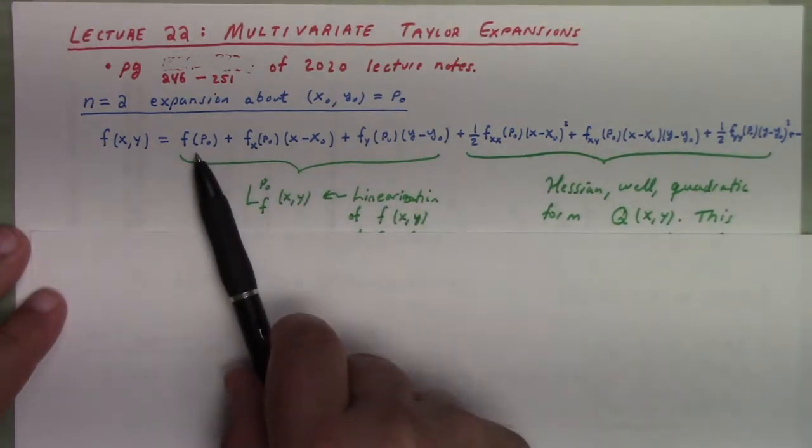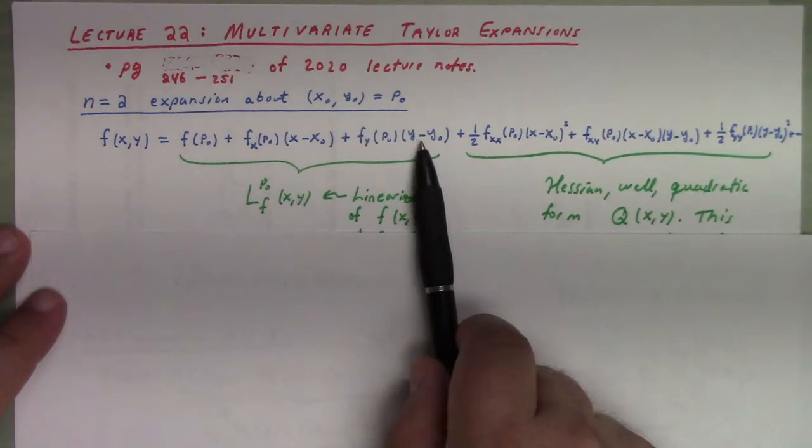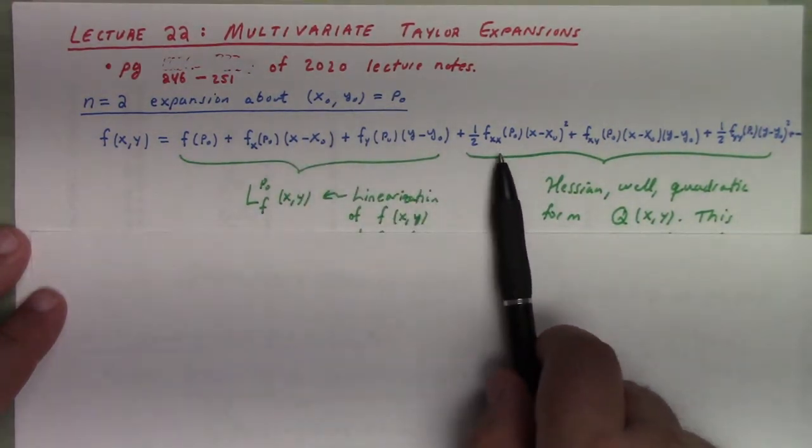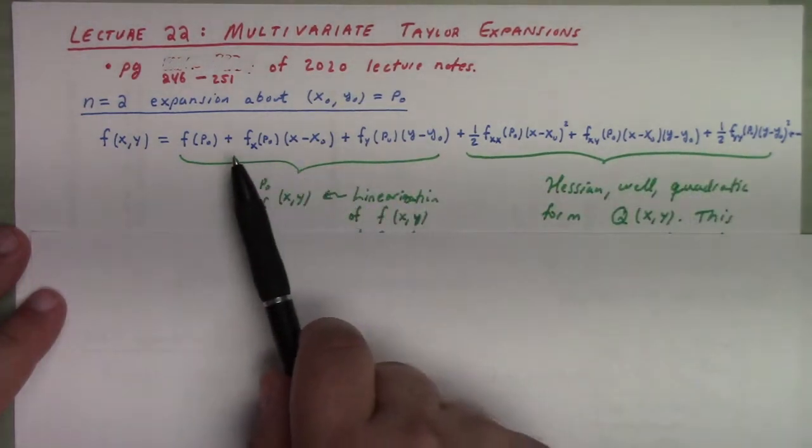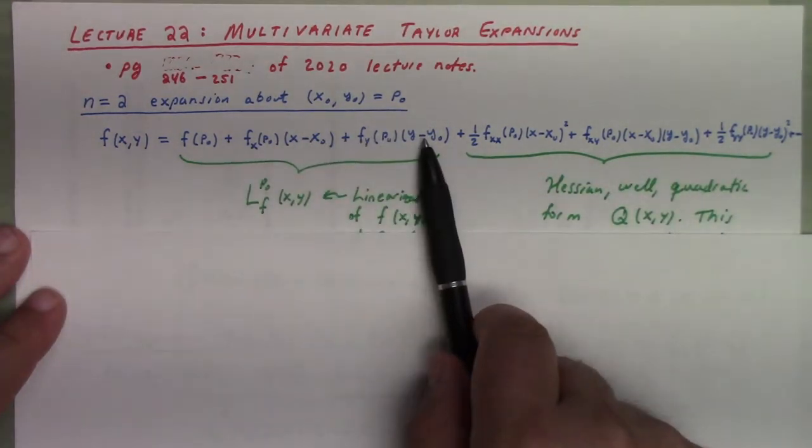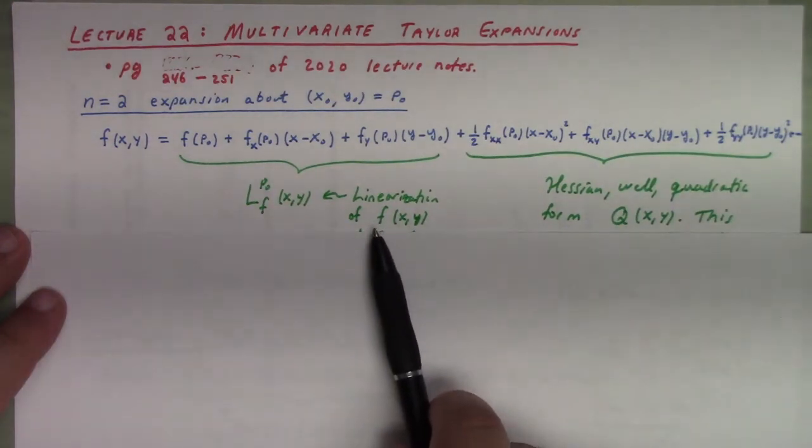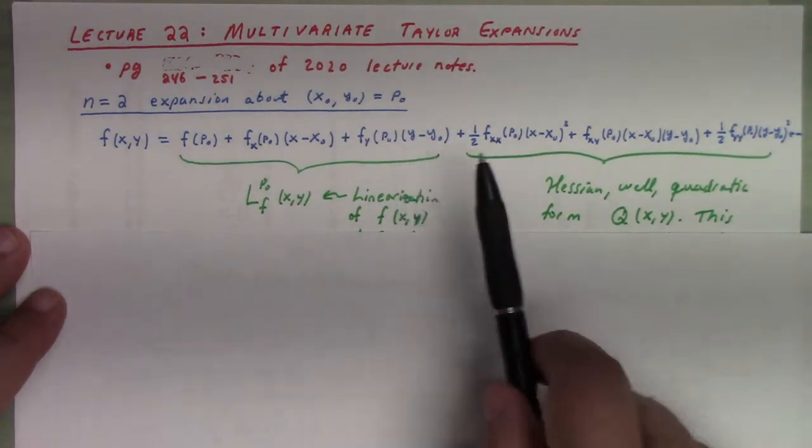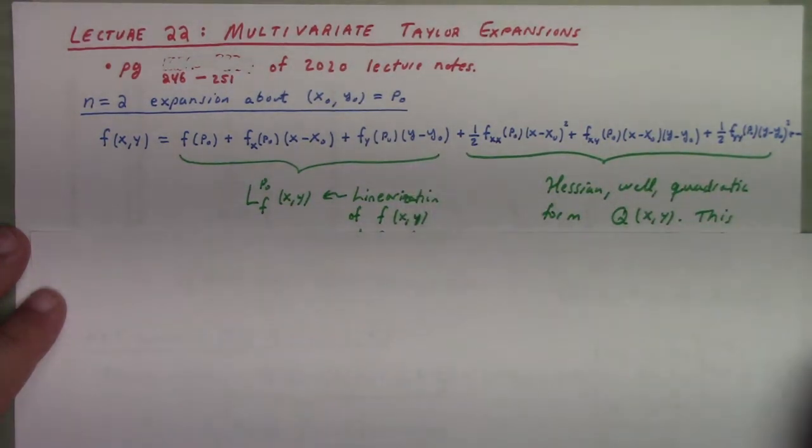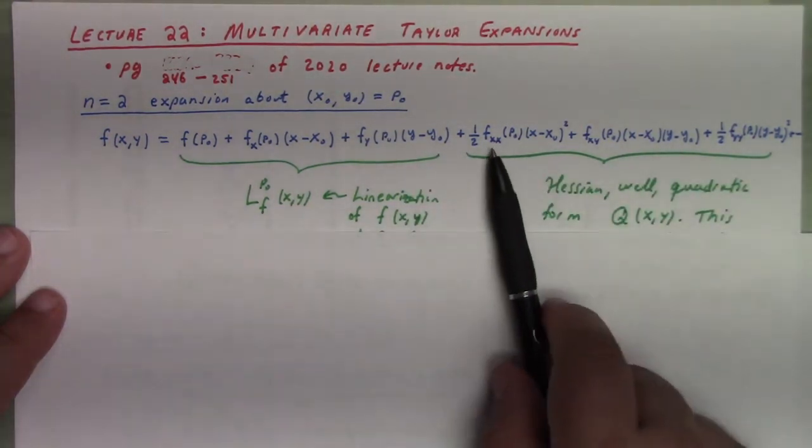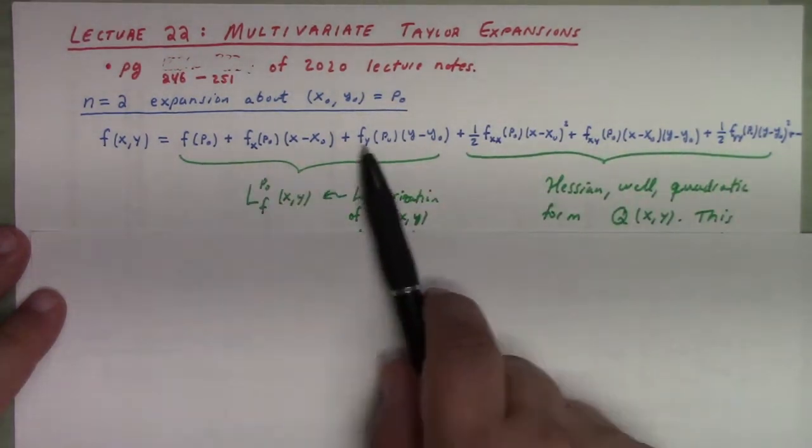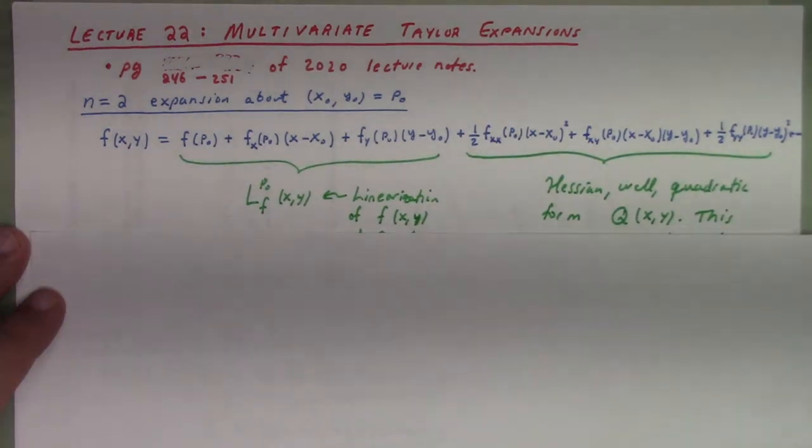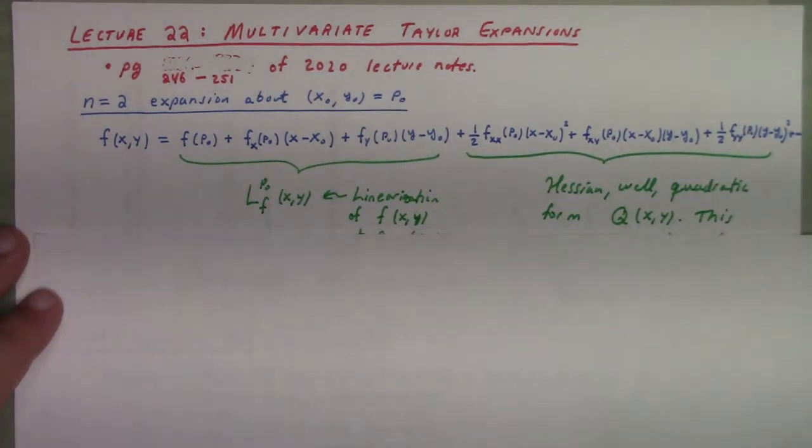To start with, you've got the constant piece, then you get terms based on the first derivative, and then based on the second derivative. The first three terms here collectively form the so-called linearization of the function. If you set z equal to this stuff, that gives you the equation of the tangent plane to the graph. Then this is the next thing past that, the best quadratic type approximation to the function of two variables.